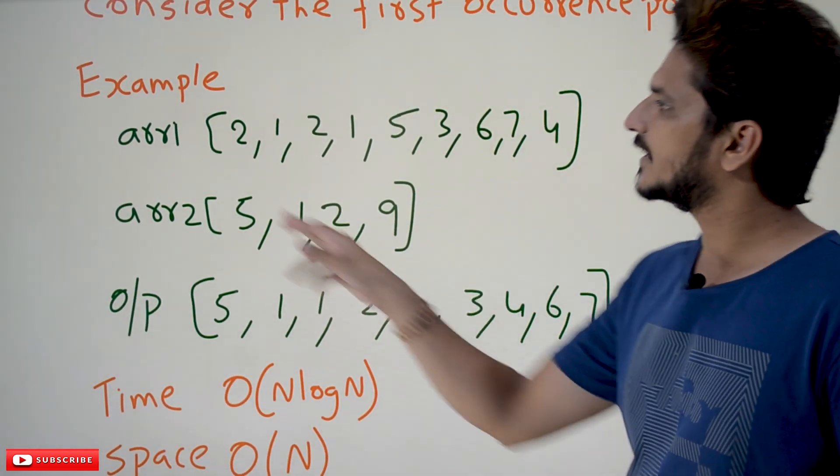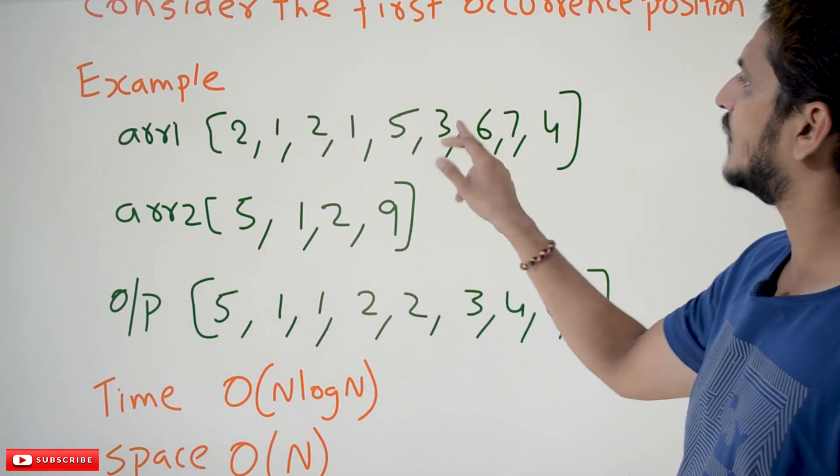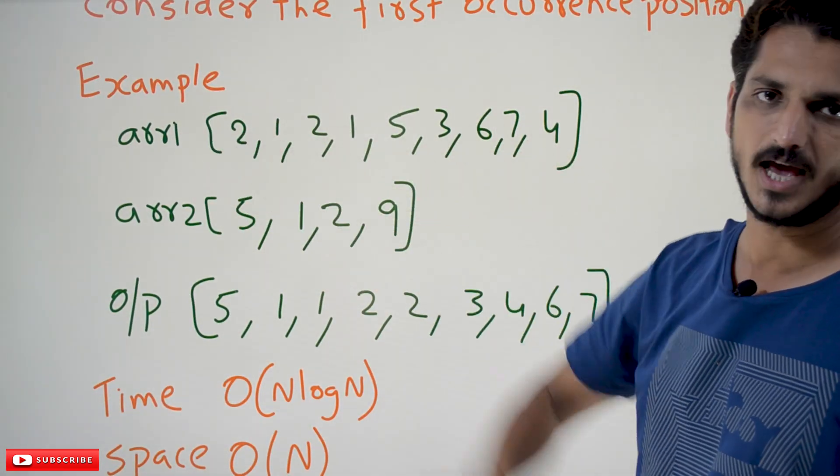For example, take array 1 as: 2, 1, 2, 1, 5, 3, 6, 7, 4. This is the first array. This has to be sorted according to array 2.